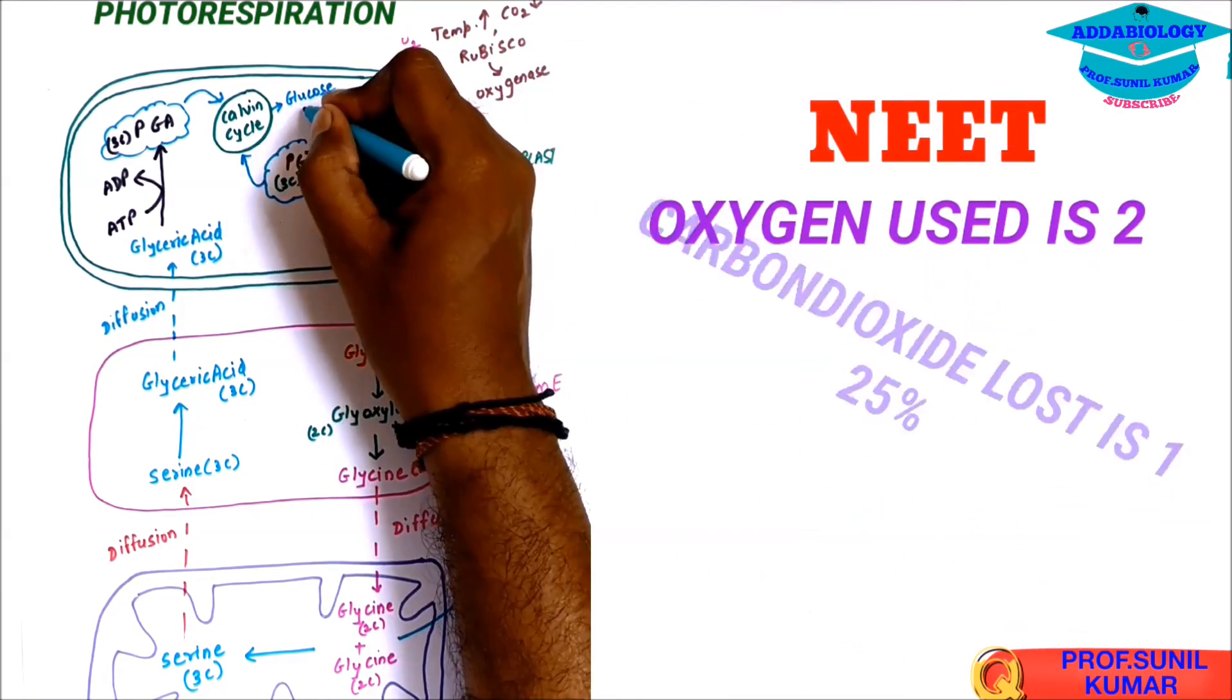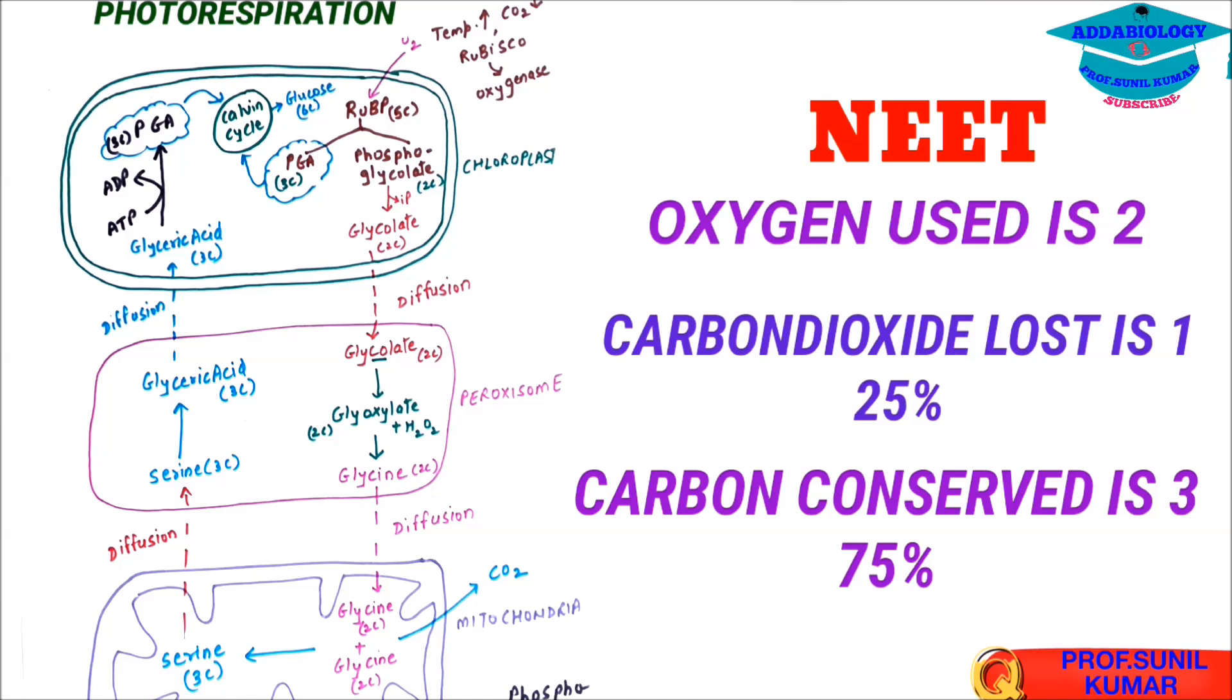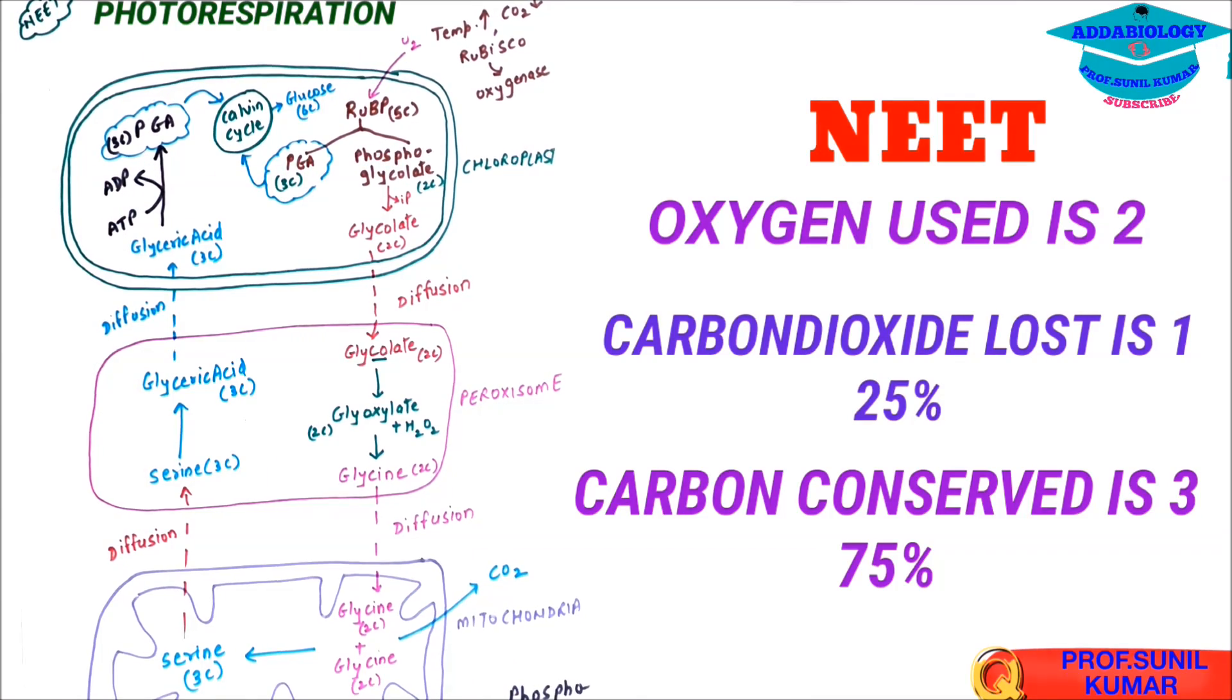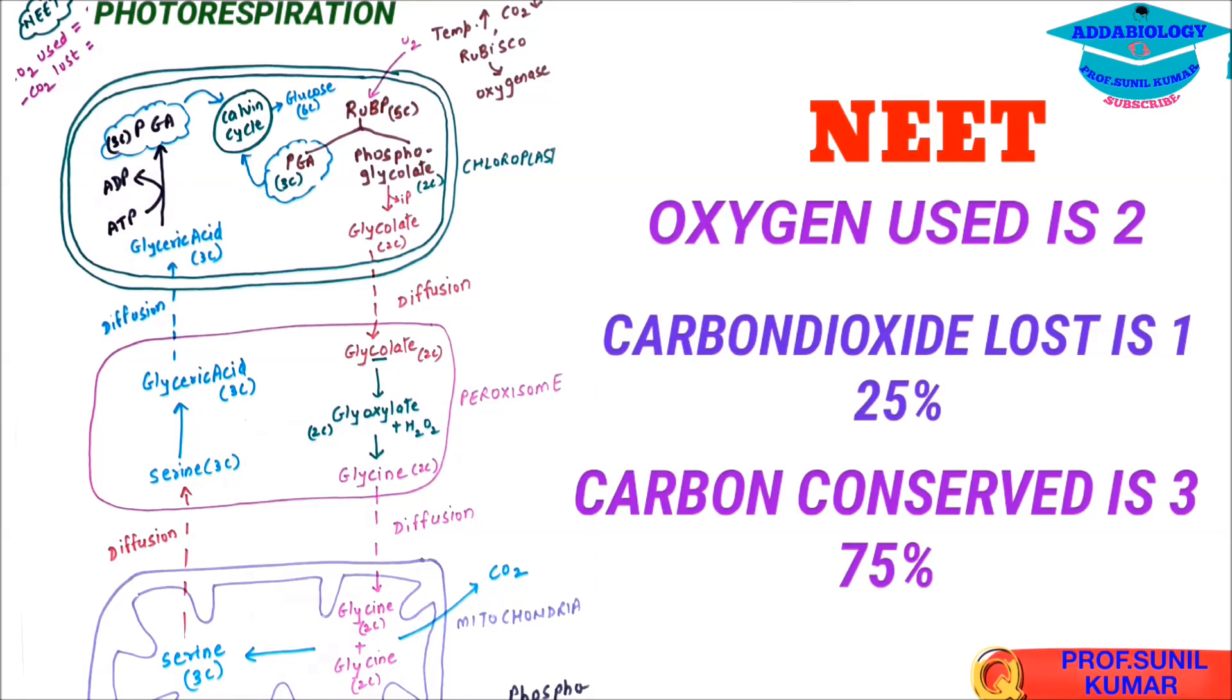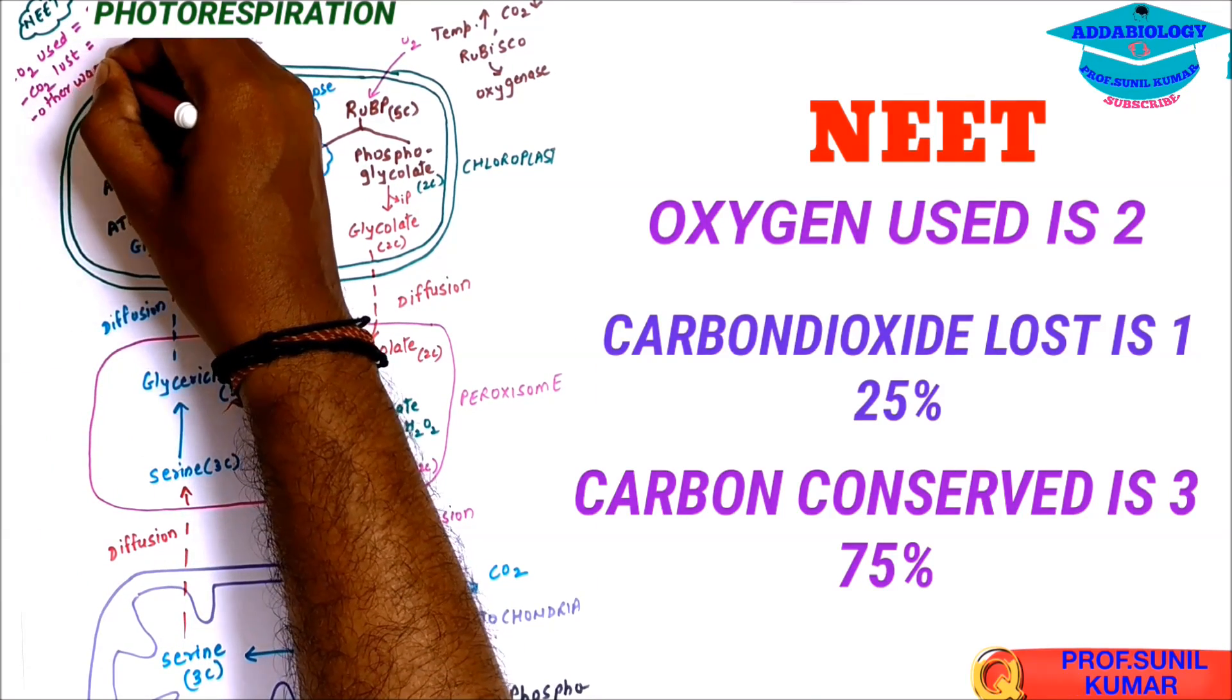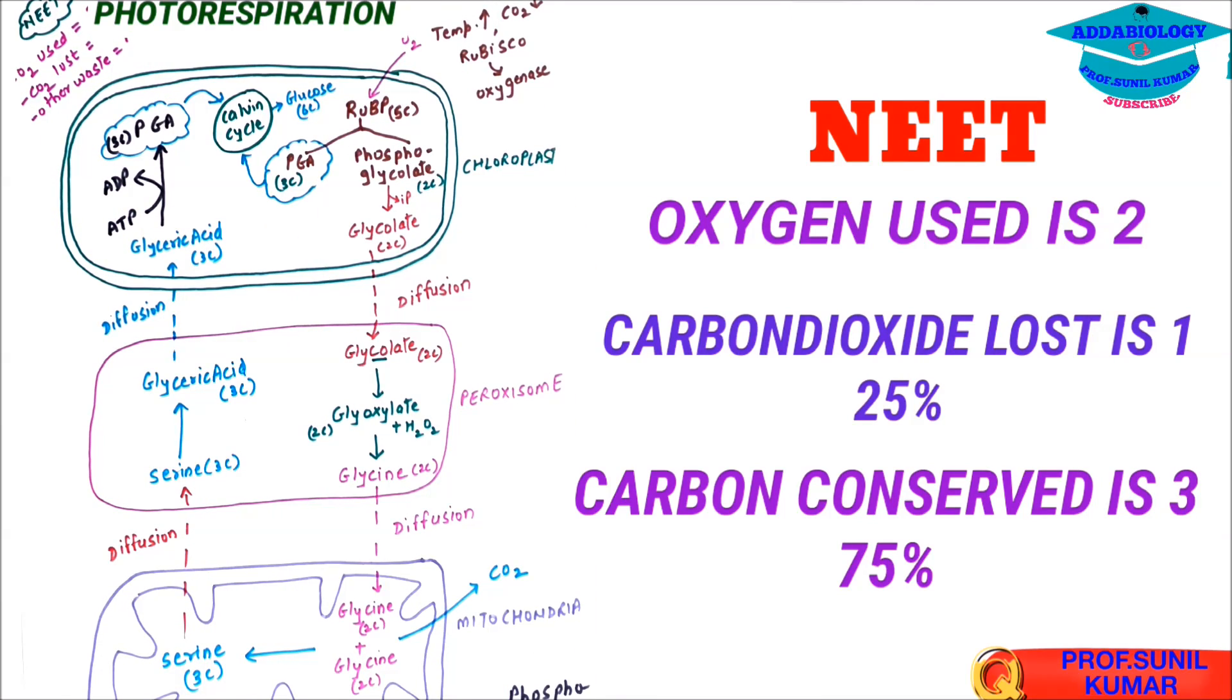Now certain questions very much important from NEET point of view. We need to understand, they ask in exam, during photorespiration how many oxygen is used? So we need to understand that two molecules of oxygen is used. One molecule is used at the starting by RUBP and one by glyoxylate. Now carbon dioxide lost is only one out of four, that is 25%, and carbon conserved is three, that is 75%.